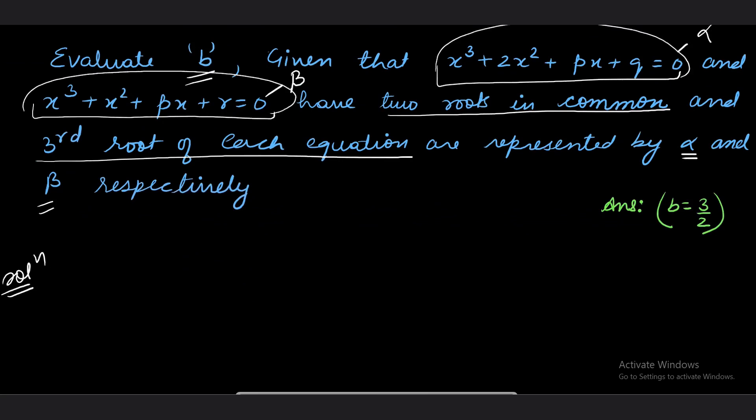I started my solution: these two cubics have two common roots. How do we identify the common root? To find the common root, you have to make the leading coefficients the same and then subtract. After subtracting, I got x² + (q - r) = 0.